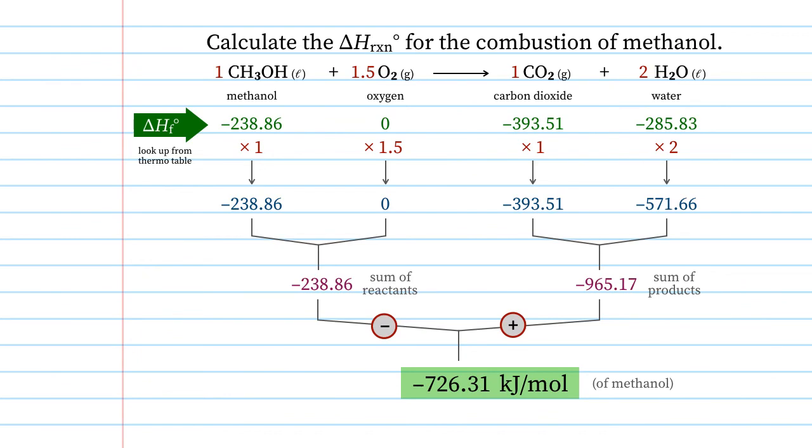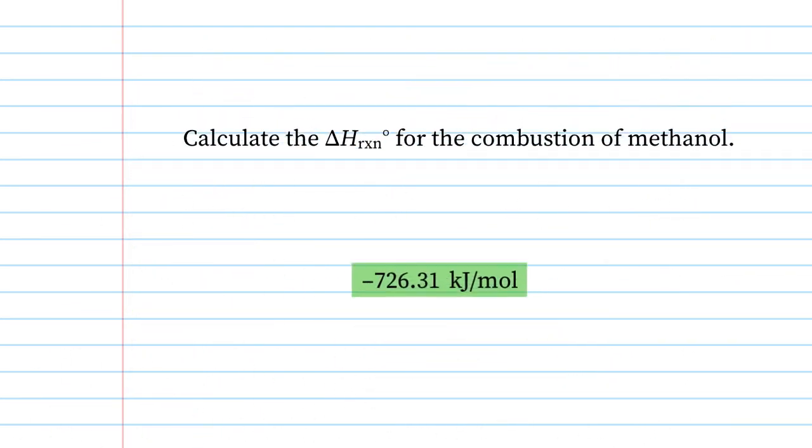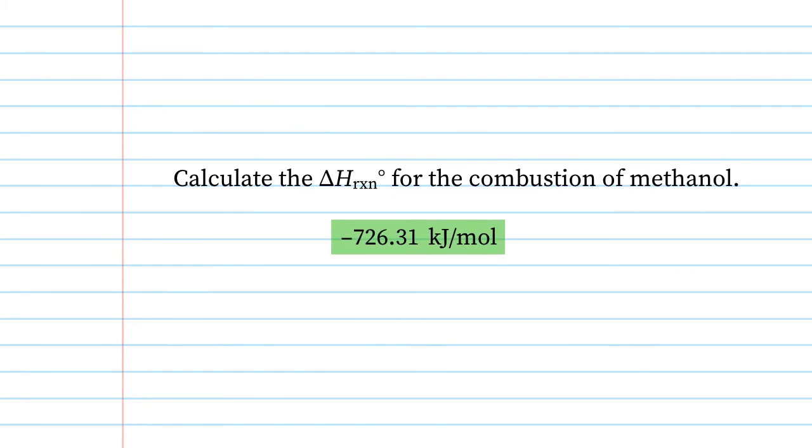So after all is said and done, if we get rid of all the rest of the calculations and just look at the answer, we find out that for the combustion of one mole of methanol, we get negative 726.31 kilojoules per mole. We did that by using table values of enthalpies of formation. Thanks for listening.